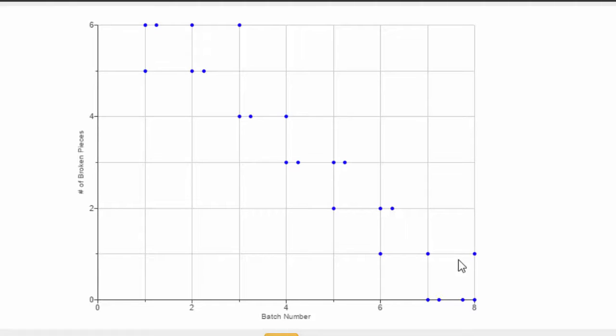There were four batches with zero broken pieces, three batches with one broken piece, three batches with two broken pieces. I'm just counting across: four, three, three, four.